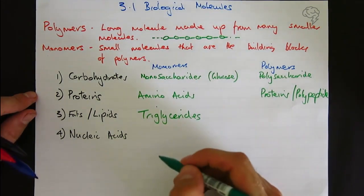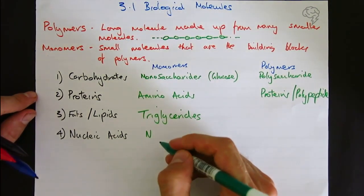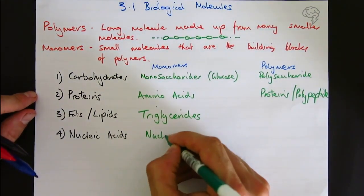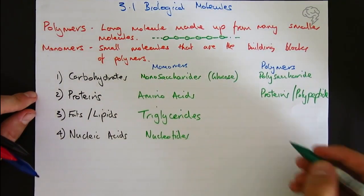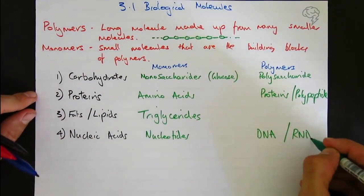Nucleic acids. The monomers are nucleotides. The examples of the polymers of course are DNA or RNA.